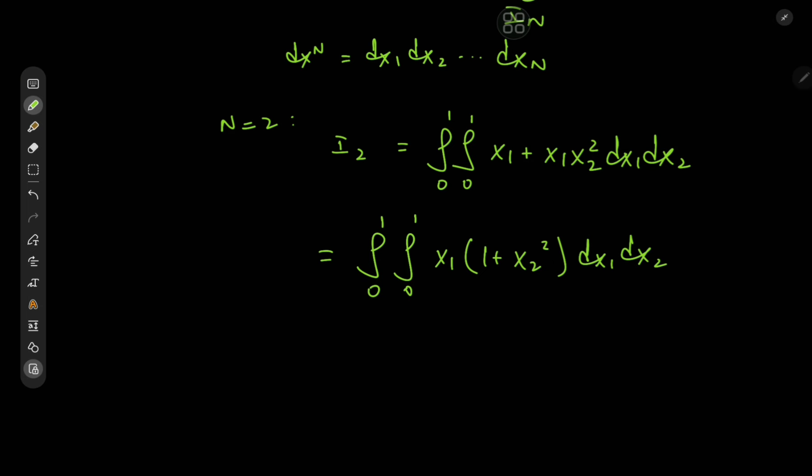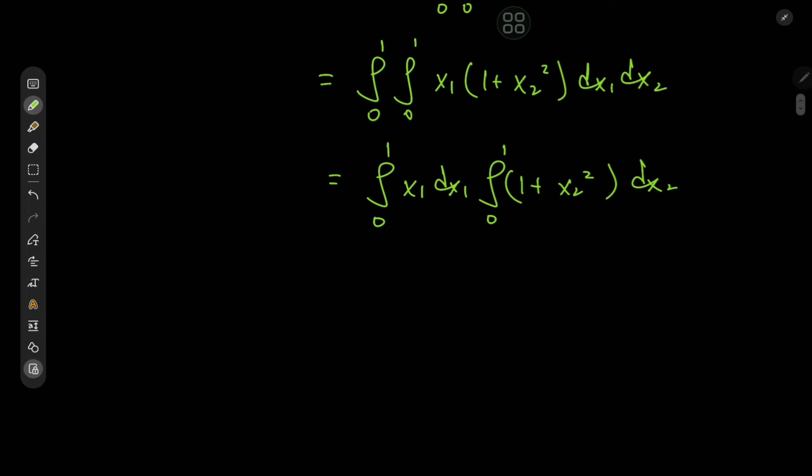And now the integrand consists of a function of x1 times a function of x2, in which we can just separate the integrals. We have integral 0 to 1 of x1 dx1 times integral 0 to 1 (1 plus x2^2) dx2. And both these integrals are quite easy to evaluate.